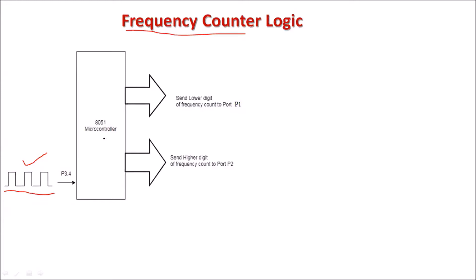We have used here the 8051 microcontroller. The unknown signal is connected to P3.4. As a final output, we won't get the frequency directly — for example, a frequency of 1 MHz. Instead we'll get some count related to this frequency, and we have to do the calculations to find the actual frequency.